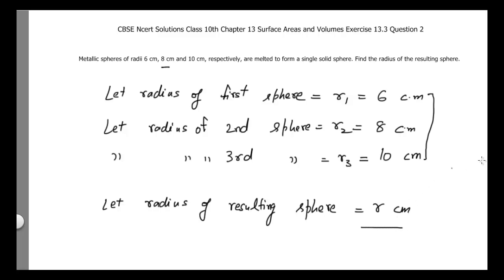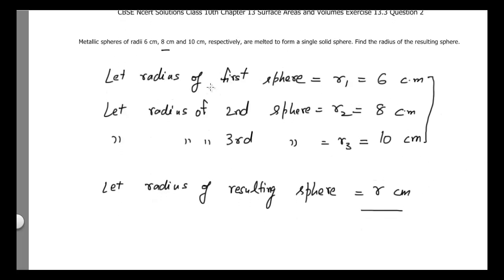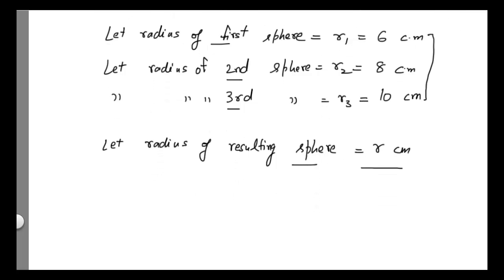It is given that all three spheres are melted to form this big sphere, which means the sum of the volumes of the first, second, and third spheres is equal to the volume of the resulting sphere. According to this condition, the volume of the first sphere equals 4/3 π r1³, using the formula for the volume of a sphere.